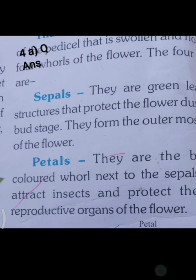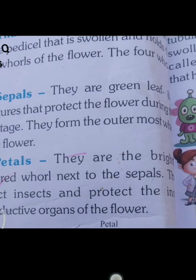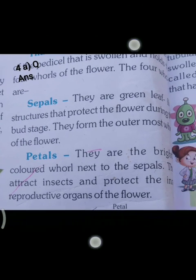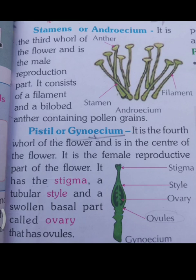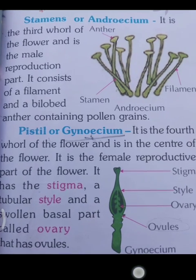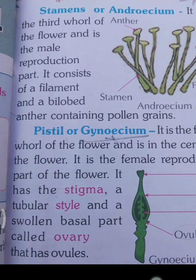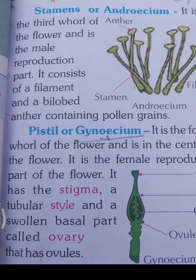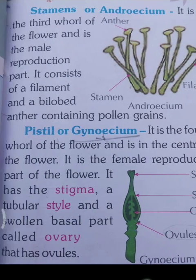Petals attract insects and protect the inner reproductive organs of the flower. Stamens or androecium — it is the third whorl of the flower and is the male reproductive part. It consists of a filament and a bi-lobed anther containing pollen grains. Gynoecium or pistil — it is the fourth whorl of the flower and is in the center of the flower.